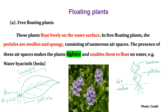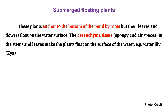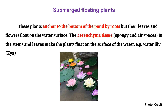The airspaces make the plant lighter, and they tend to float on the water surface. These floating aquatic plants anchor to the bottom of the pond by roots. Water hyacinth is a free-floating plant.